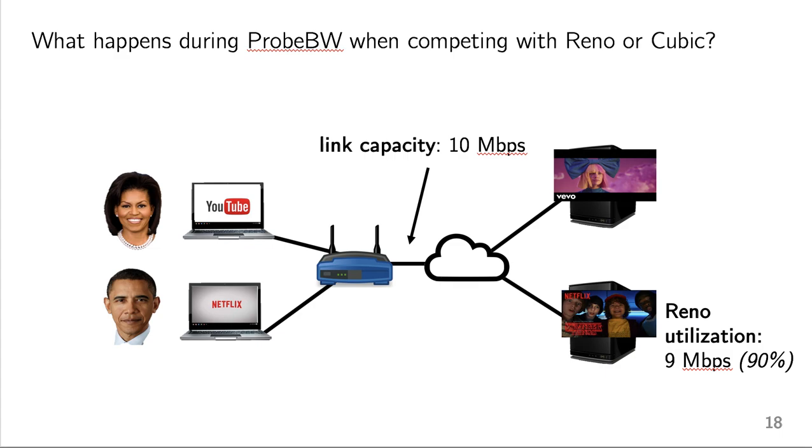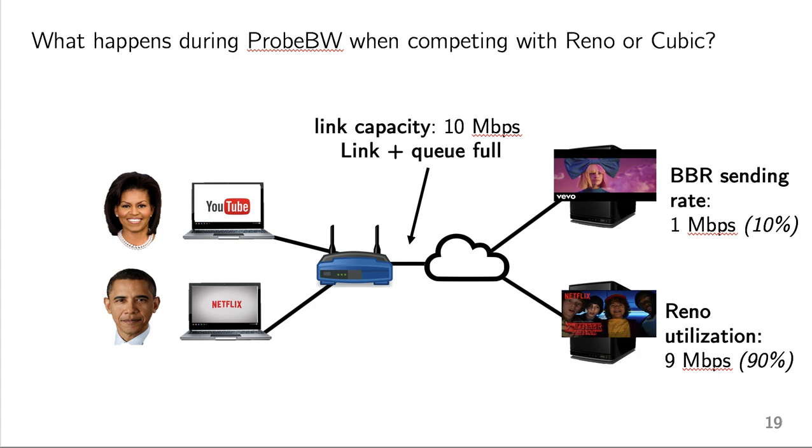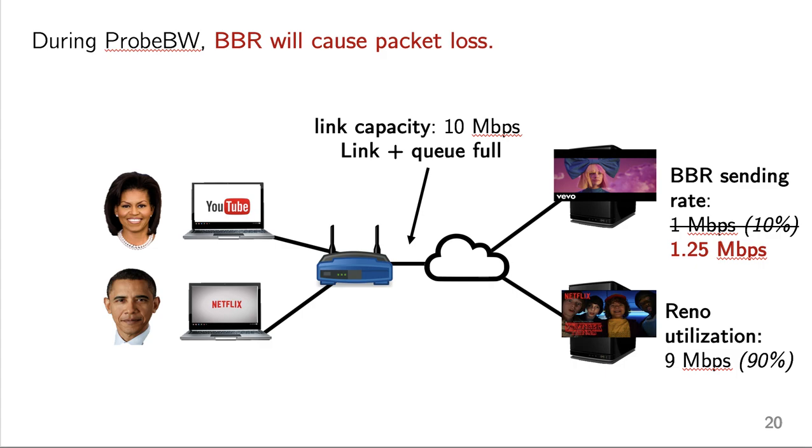But what happens during probe bandwidth when competing with Reno or Cubic? So let's say Barack is now also home, but he's watching Netflix, which uses Reno for congestion control. So imagine Reno is currently using 90% of the link and getting a throughput of 9 megabits per second. And let's say BBR is using the rest of the link, so it's sending at 1 megabit per second, so it's getting about 10% of the link. So now the link and the queue are full here. So now when BBR increases its sending rate, it's going to try to increase its rate from 1 megabit per second to 1.25 megabits per second. But again, I'm now over capacity, so BBR is going to cause packet loss during probe bandwidth.